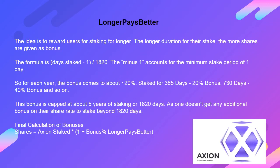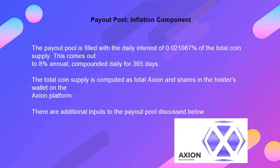Final calculation of bonuses: Shares = Axion staked × (1 + bonus percent from longer pays better). Payout pool — inflation component: the payout pool is filled with the daily interest of 0.021087% of the total coin supply. This comes out to 8% annual, compounded daily for 365 days. The total coin supply is computed as total Axion and shares in the holder's wallet on their Axion platform. There are additional inputs to the payout pool discussed below.